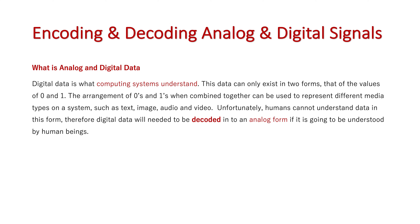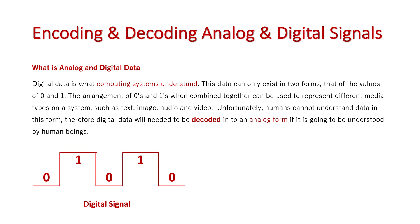With zeros and ones, humans don't understand it, so these zeros and ones need to be decoded back into an analog form if they're going to be understood by human beings. Here is a digital signal. As you can see, it's either zero or one. The gaps between are always exactly the same — there is no varying — and they're always at the same height. It's either a one level or a zero level, always at the same level. Much more structured than the variable analog wave.